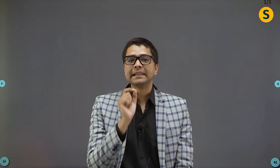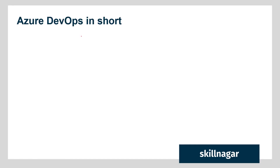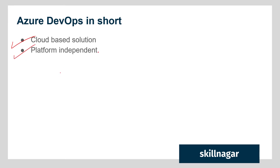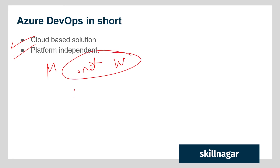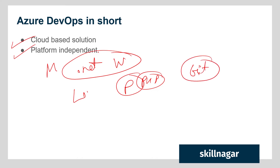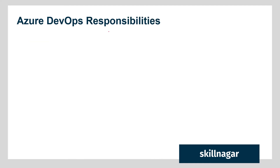If I have to give a very short summary of Azure DevOps, I would say it is a cloud-based solution and it is platform independent. You are not limited to Microsoft technology — you don't have to be building on .NET or using Windows Server. You can use Linux, any operating system, Python, PHP, or any language. If you are using Git to manage your source control, you can use Microsoft Azure DevOps, because that is the very basic foundation of an Azure DevOps project.